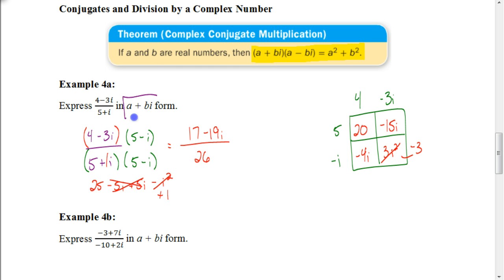We want our answer to be in a plus bi form. So I'm going to take this fraction and break it up into the real number portion, which would be 17 over 26, and then it's going to be minus 19i over 26. Neither of those fractions can be reduced, so that would be our final answer: 17/26 minus 19i/26.